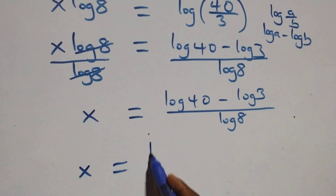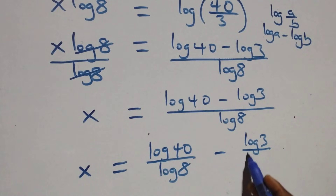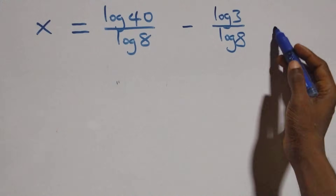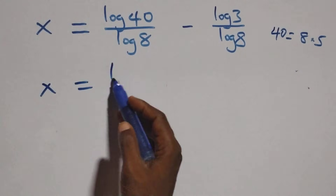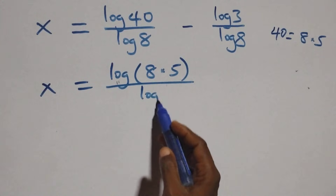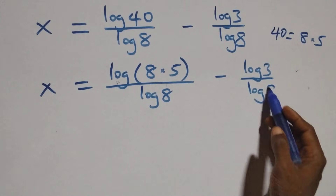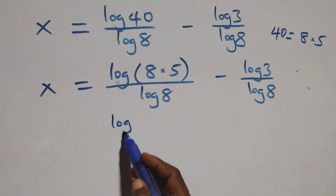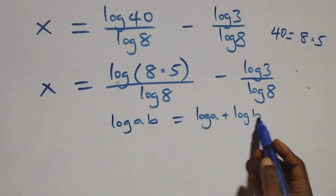Now we rewrite: log(40) equals log(8 times 5), so we split the numerator. We apply the product law, where log(a·b) equals log(a) plus log(b), giving x equals (log(8) plus log(5)) over log(8), minus log(3) over log(8).